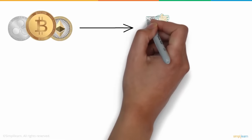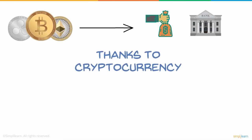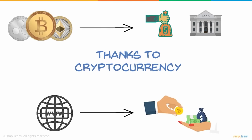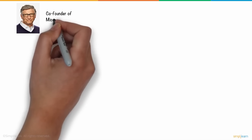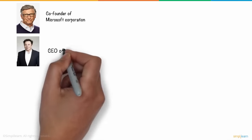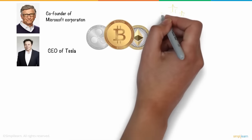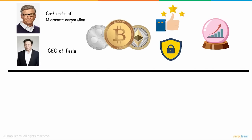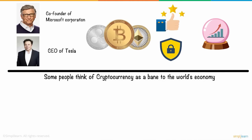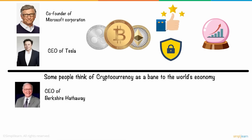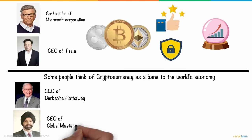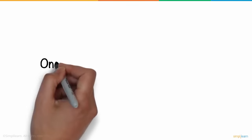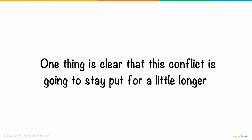Cryptocurrency is revolutionizing finance and banking around the world. Thanks to cryptocurrency, anyone with an internet connection can trade, spend, and borrow money globally. People like Bill Gates, co-founder of Microsoft, and Elon Musk, CEO of Tesla, support cryptocurrency as much better and more secure than physical money with a great future for the world's economy. On the other hand, Warren Buffett, CEO of Berkshire Hathaway, and Ajay Banga, CEO of Mastercard, feel cryptocurrency is a platform for criminal activities and will destroy the world's economy.